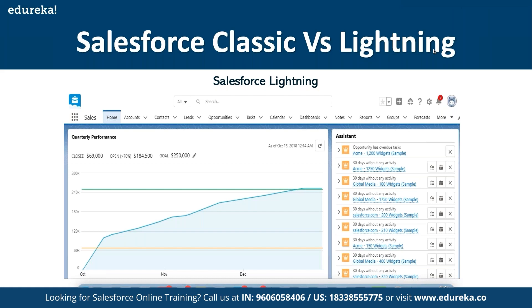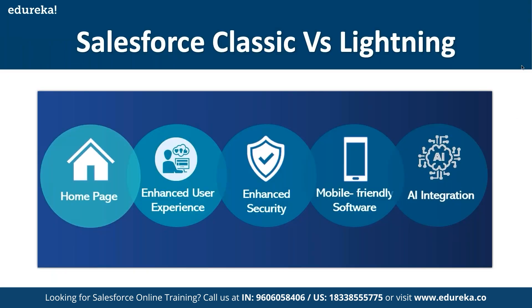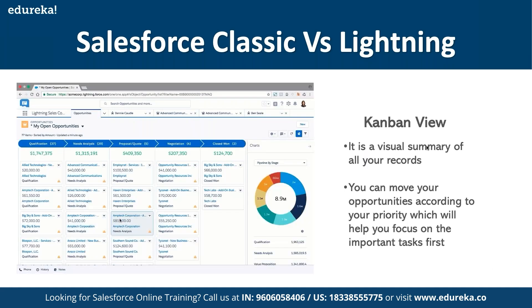Multiple features have been added in the Lightning edition: efficient navigation and the ability to switch between different custom apps; new record layouts that focus on what we can do rather than just what we can view; turbocharged list views that can be filtered and visualized easily; quick access to tools like notes and recent items in the utility bar; beautiful dashboards with components spanning both columns and rows; and sleek report views with quick filtering. Better integration and better security are also key features.